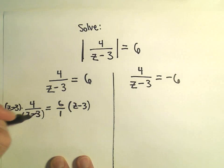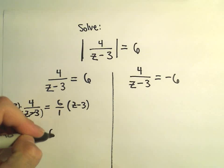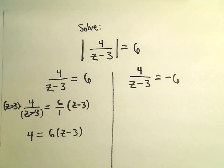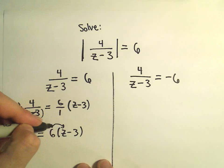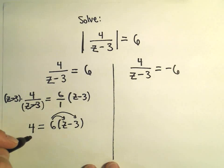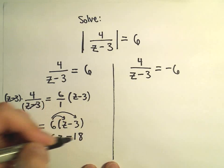So on the left, the z minus 3's would cancel and we would have 4 left over. I basically have 6 times z minus 3 on the right. Two different things we can do. I usually just go ahead and distribute. You could divide by 6, but I don't like to deal with fractions if I can avoid it. So we'll get 6z, 6 times negative 3 is negative 18.